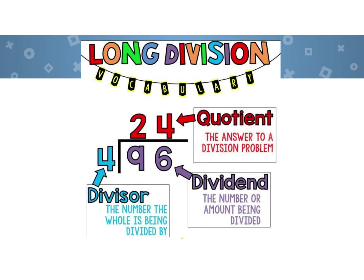This is just a poster to remind you of the long division vocabulary. So the number that we start with, the total number, is 96, and we're dividing it into four equal parts of 24. So the divisor, the dividend, and the quotient. I just wanted to put this up here to remind you as we're using mathematical words.